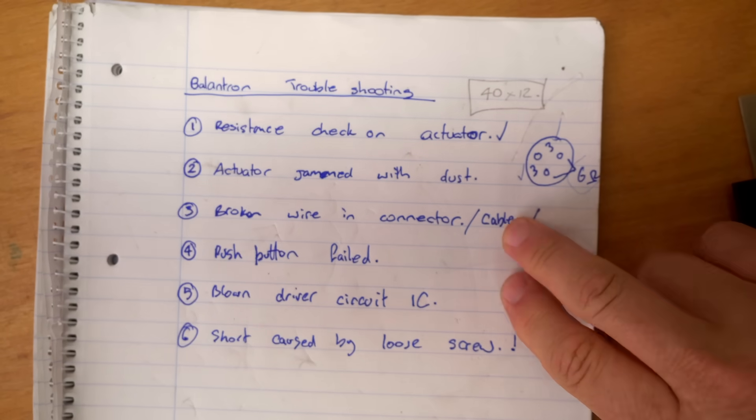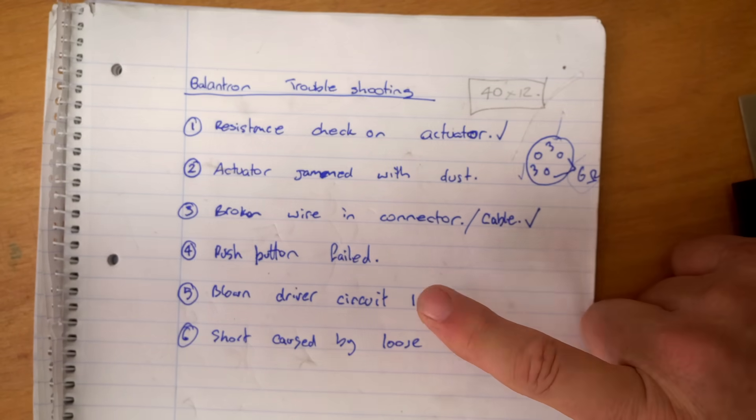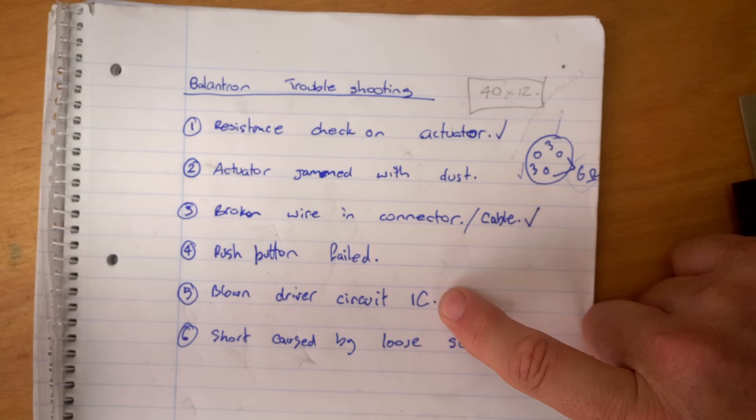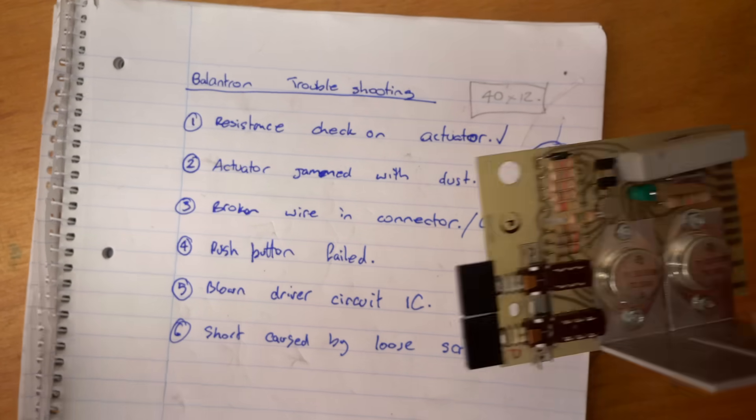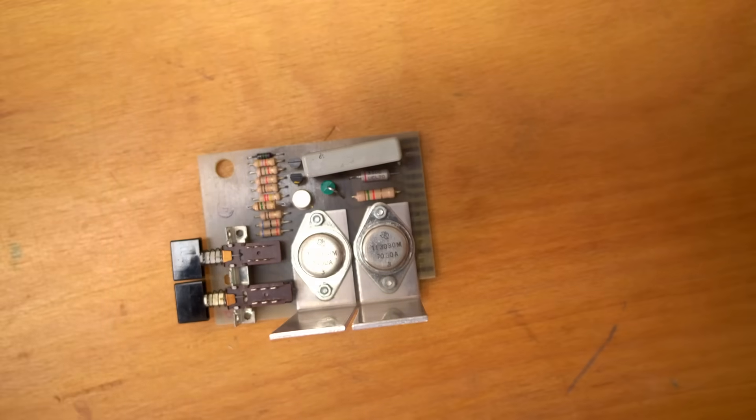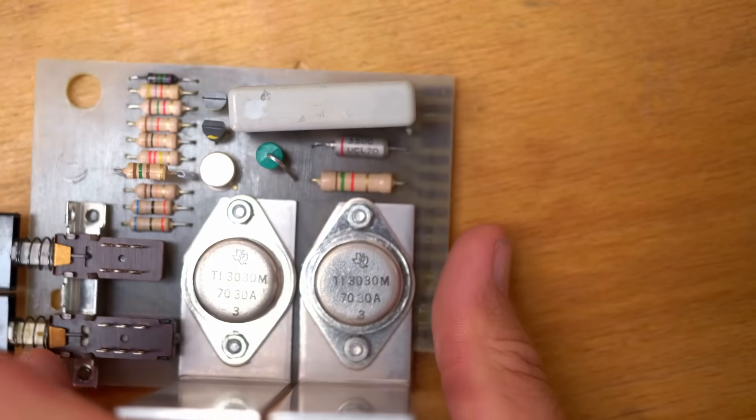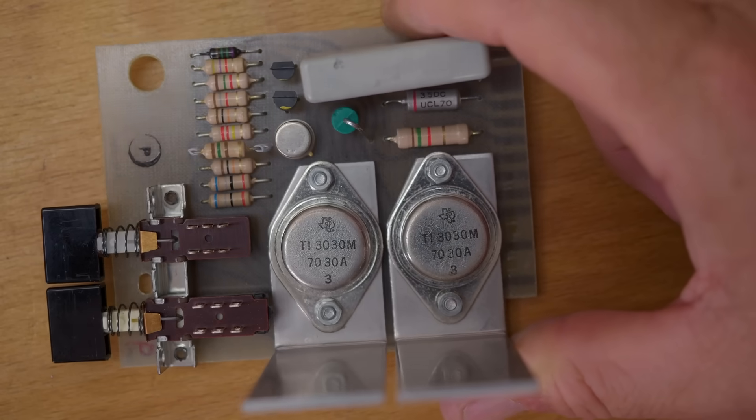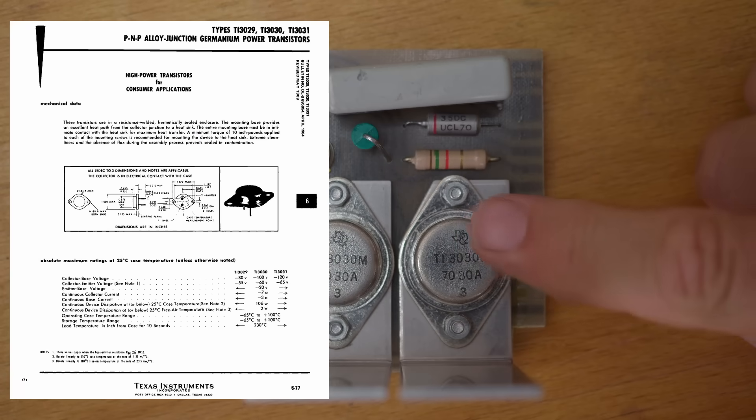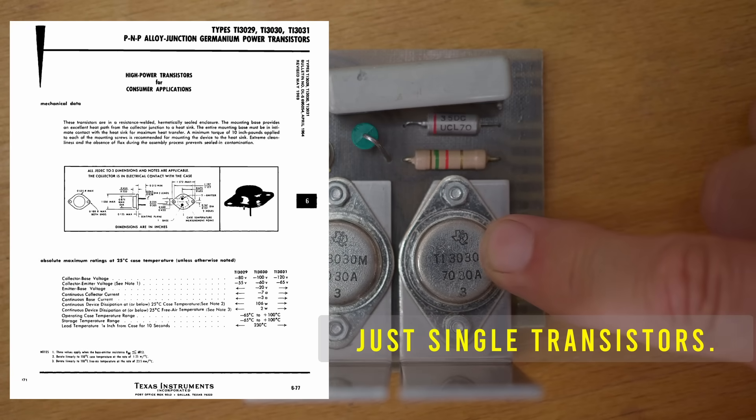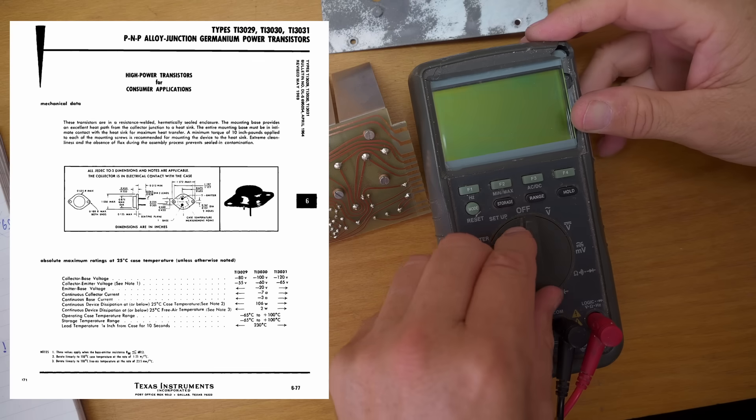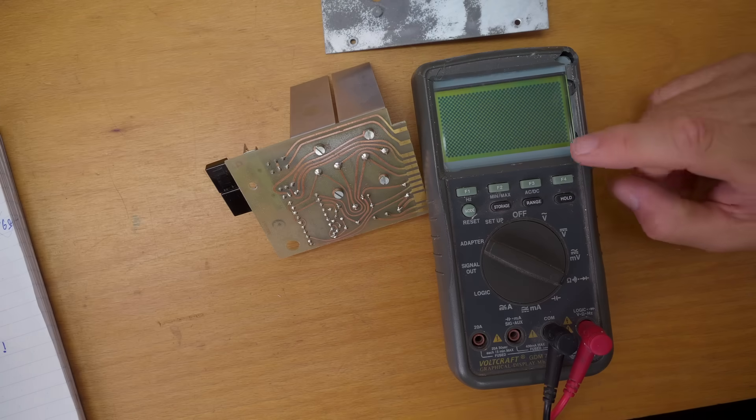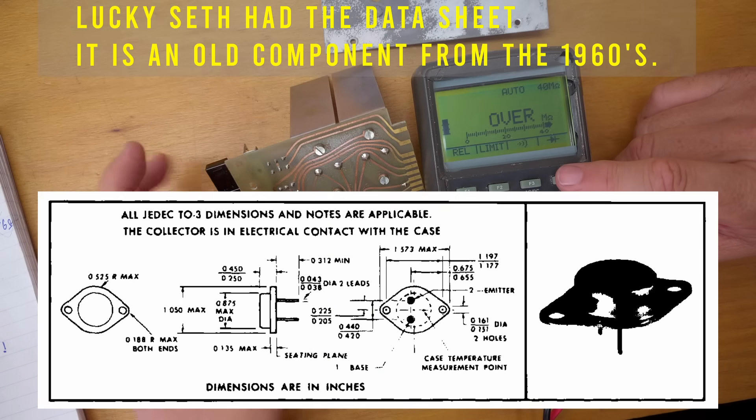Since we've got it broken down this far and I now have access to the driver circuit let's take a quick look at those ICs and see what they're like. Gonna guess it's these Texas Instrument 3030Ms. I put up a photo on my Patreon page and Seth had a data sheet for those ICs. So let's go through and check them. And that was helpful having that data sheet because now I know which pin is which.